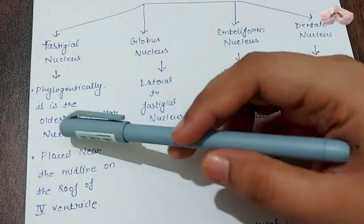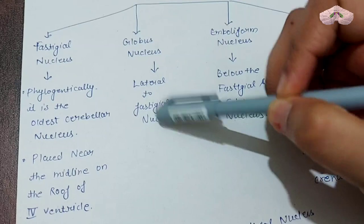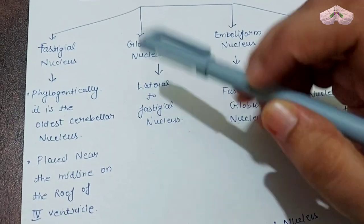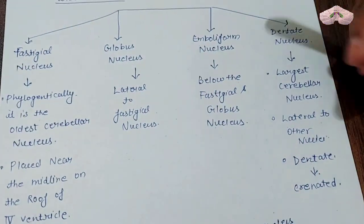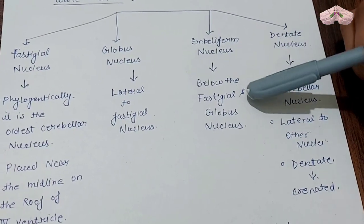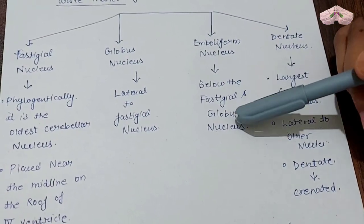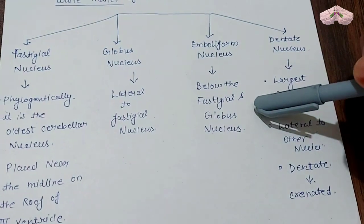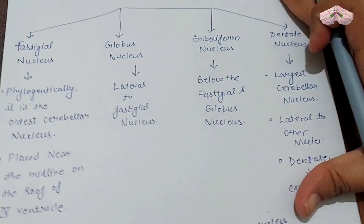Next is the globose nucleus, which is lateral to the fastigial. Then the emboliform nucleus, also lateral. The dentate nucleus is the largest cerebellar nucleus.